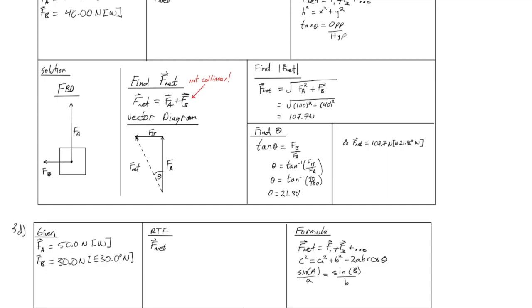Therefore, Fnet is equal to 107.7 newtons, north 21.80 degrees west. And the reason why it's north and 21.80 degrees west, because if you take a look at the angle here, we are north, then west. So, this angle here moves from the north towards the west, and that is the direction of our net force.